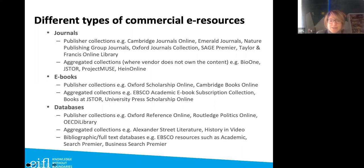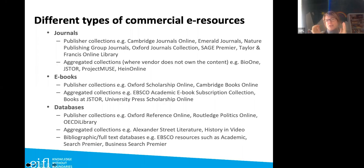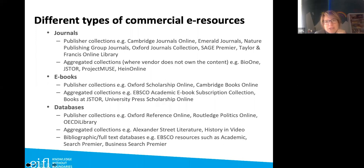Then there are databases — again with both publisher-owned and aggregated collections. The difference between databases and ebooks or journals is that databases contain different types of content: not just journals or books, but definitions, articles, images, pictures, and perhaps video. Databases really cover everything else — different types of content such as history, video, art with images, or dictionary entries. It's broader than journals and books.